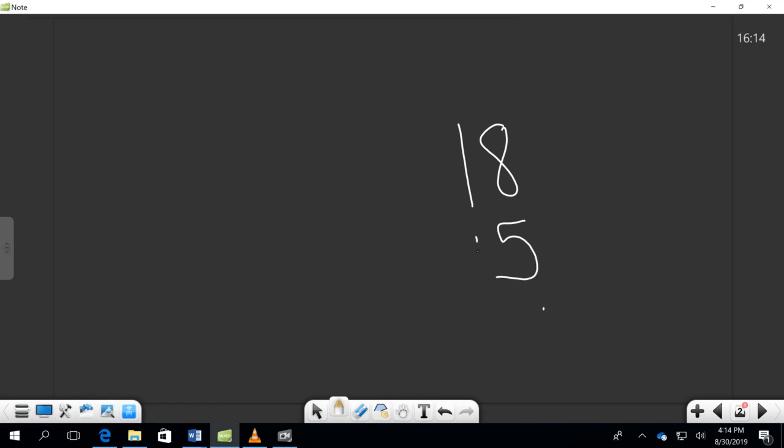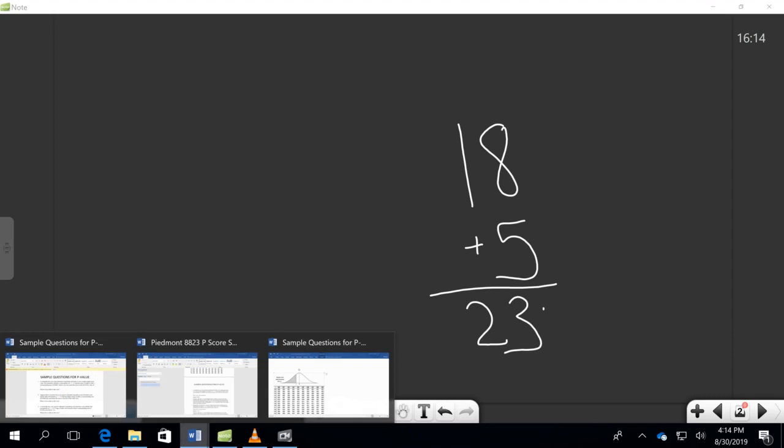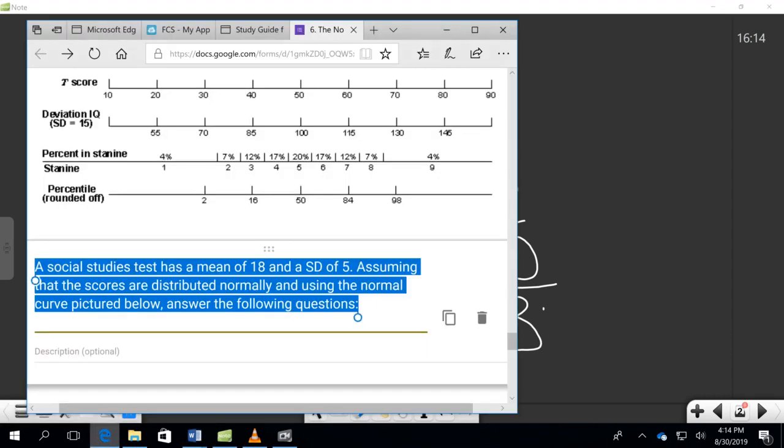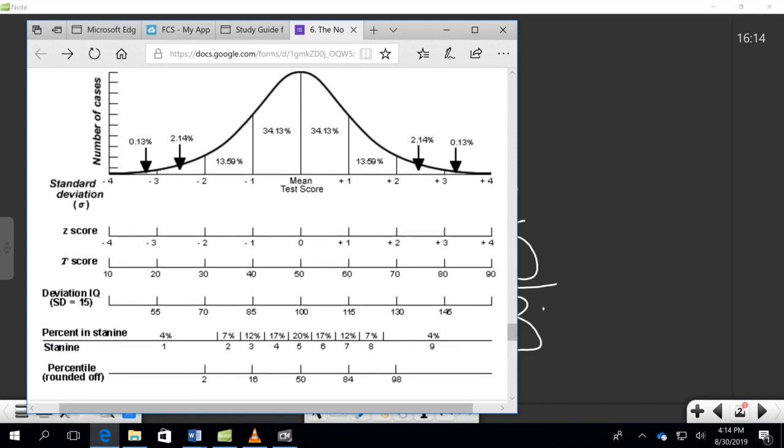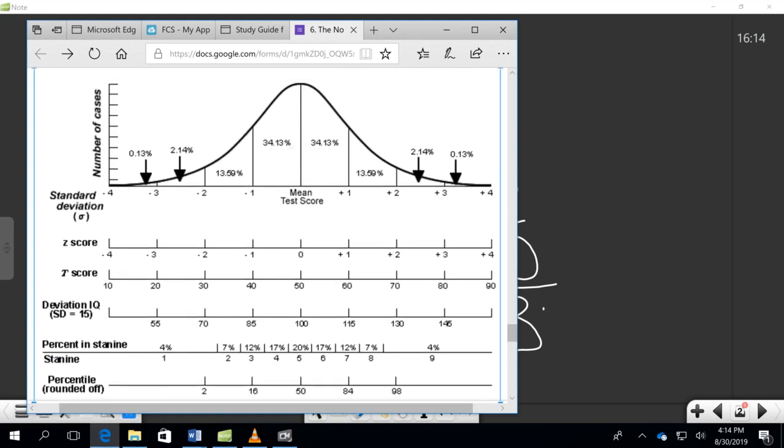So to find out her percentile rank, we're going to add those together, which is going to give us 23. Now let's go back over here and see what 23 looks like. If this is 18 right here, then 23 is going to bring me right here to this line,